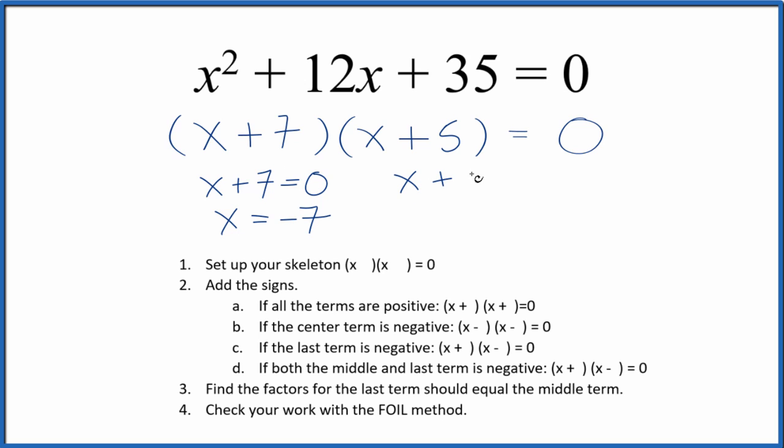Here x plus five equals zero. We add negative five to both sides. We get x equals negative five.